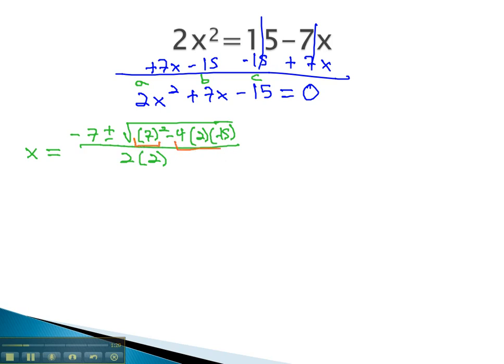We can now simplify by doing the multiplication and exponents to get x equals negative 7, plus or minus the square root of 49, plus, because we have a negative times a negative, 4 times 2 times negative 15, is 120, all over 2 times 2, which is 4.